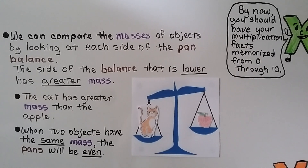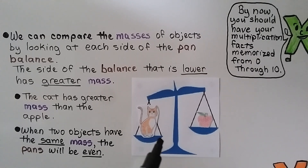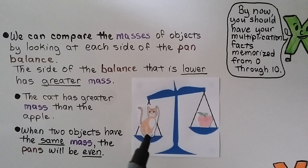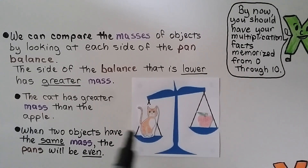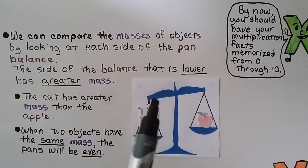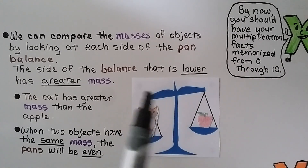We can compare the masses of objects by looking at each side of the pan balance. The side of the balance that is lower has greater mass. So the cat has greater mass than the apple. When two objects have the same mass, the pans would be even, going straight across.